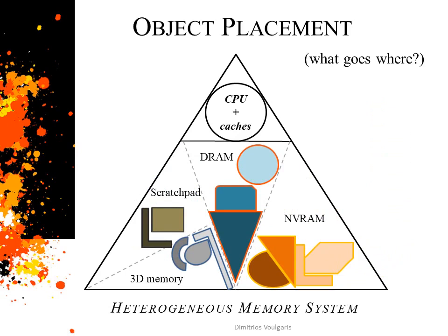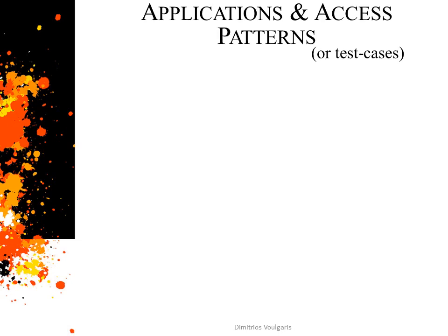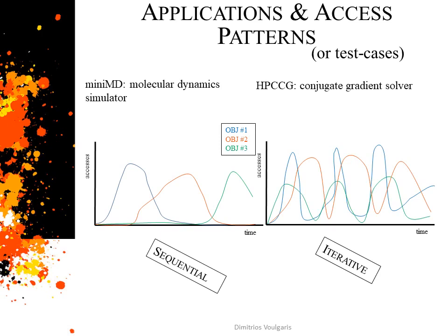I've been mentioning the word application as if it were a black box — it is about time to open that box. During experimentation, I found an interesting correlation between the access pattern of the application and the maximum sampling period that results in reasonable speedup. Our test cases were two applications with different memory behavior: the first presents an almost sequential access pattern, referring to different objects for every part of its execution time, while the second has an iterative behavior, accessing the same objects over and over. In the graphs, you can see a qualitative representation of the access rate of some objects as the program is executed.